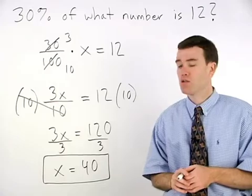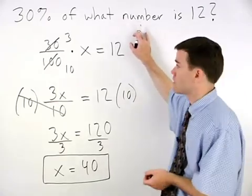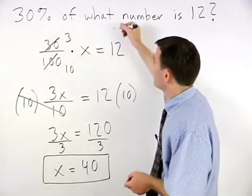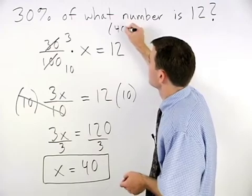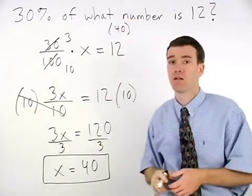Now let's check our answer back in the original problem to see if it makes sense. We have 30% of 40 is 12. Well,